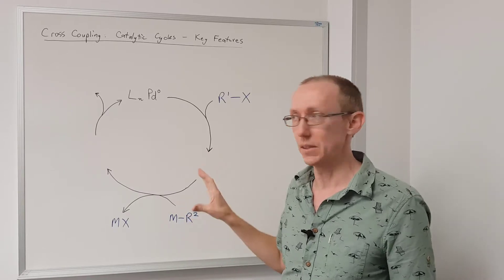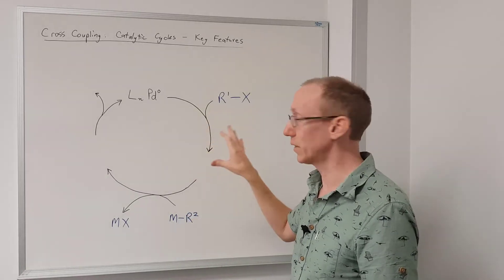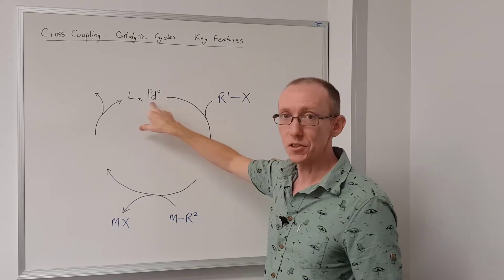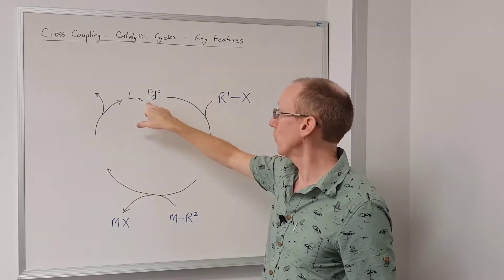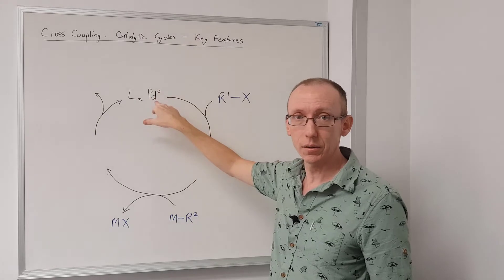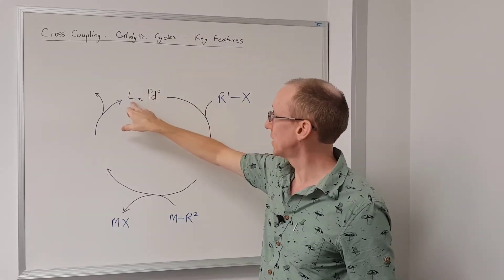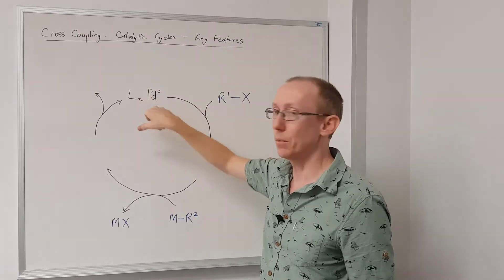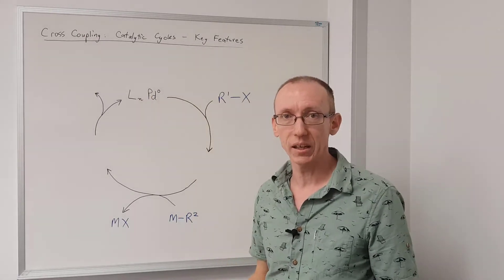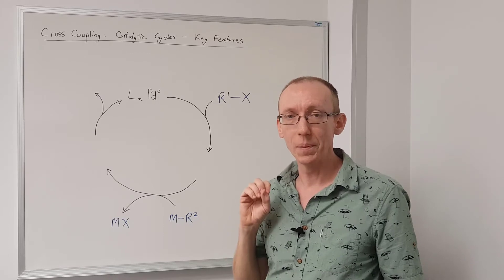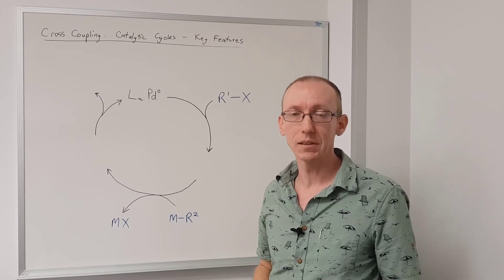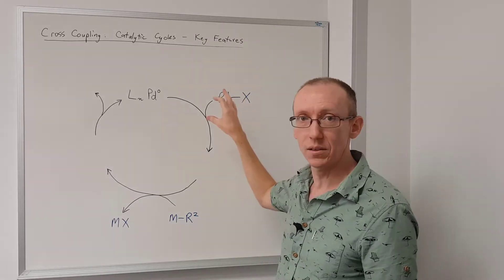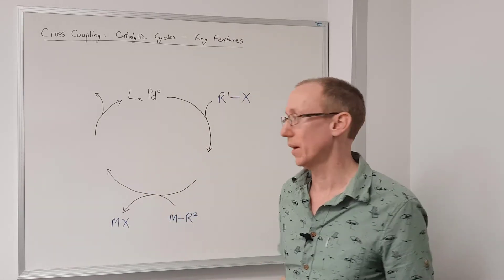The mechanisms are very similar; they all share key features in common. For these reactions, generally we start off with a palladium(0) complex. We've drawn this out with some number of ligands — generally we'll have a stable resting state of that palladium(0) species, which will normally be an 18-electron species, and that will need to lose a ligand so that we can bind to our first reaction partner.